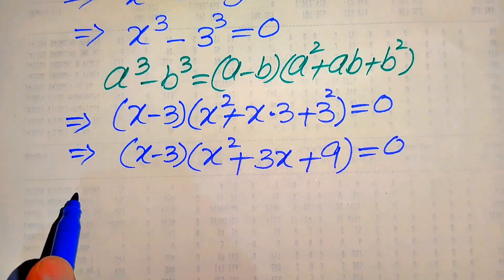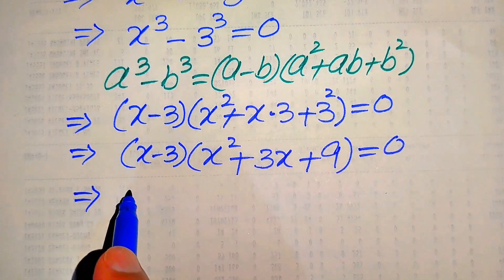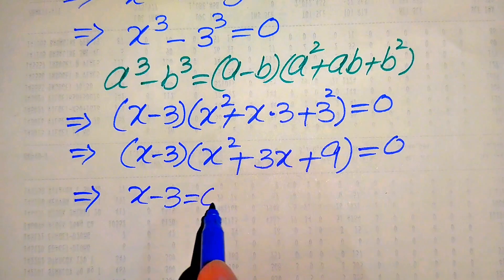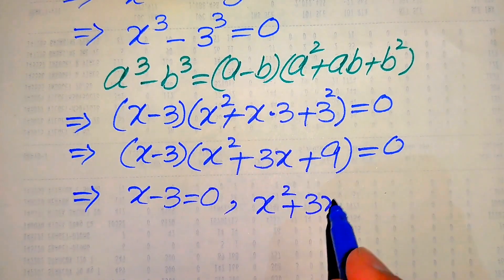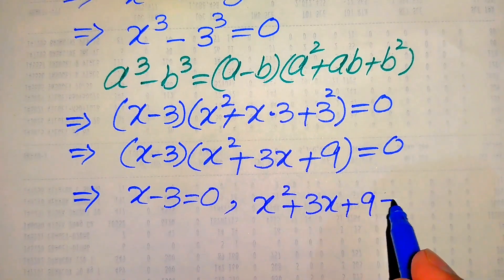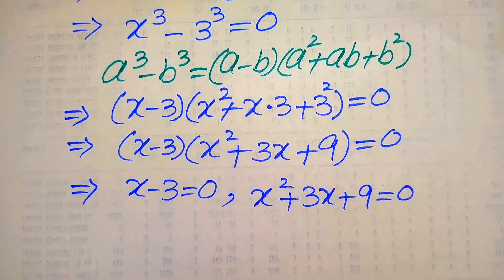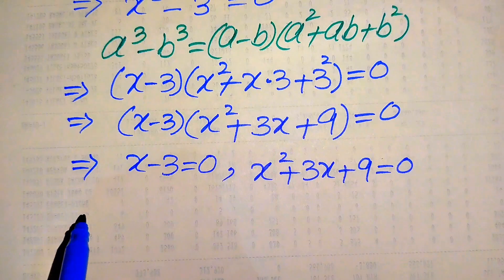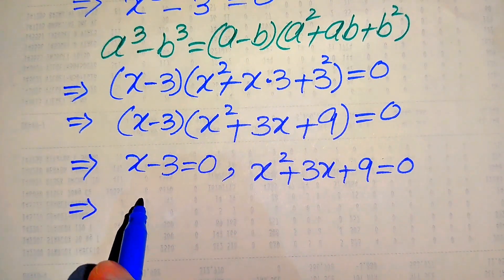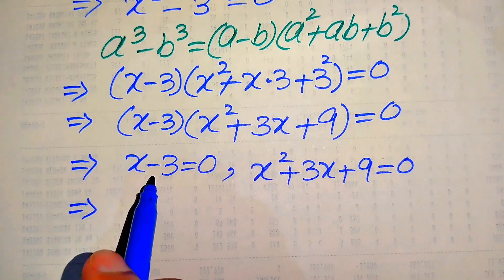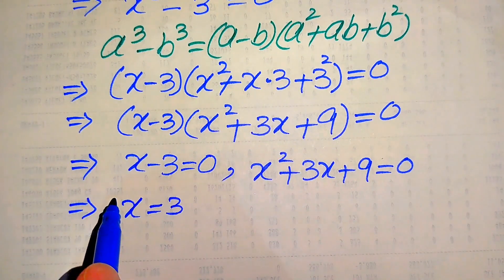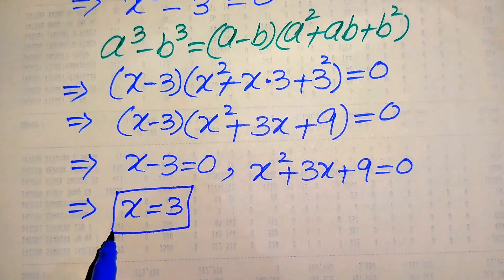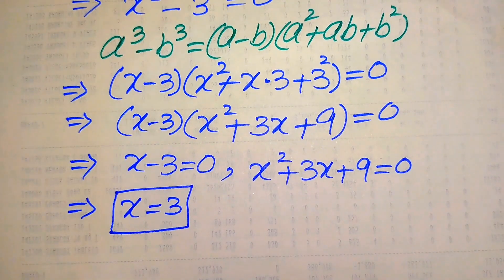We divide this into two cases. The first case is x minus 3 equals zero. Moving the minus 3 to the right hand side, we get the first real root of the given equation: x equals 3.